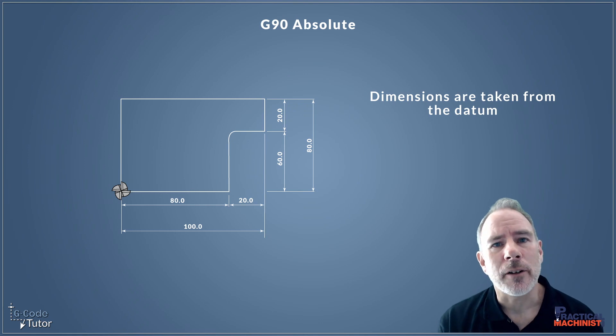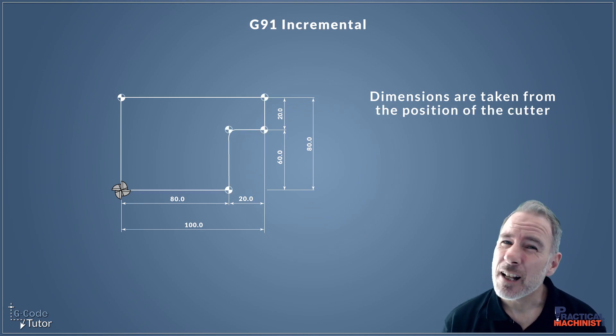When we're programming incremental, all the dimensions come from the last known position of the cutter. We can take it as a datum shift where the datum shifts every time the cutter reads a line of G-code. So as we're cutting along our path, each movement will be from the last known position of the cutter and not the datum point.